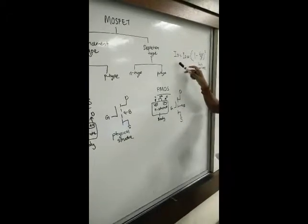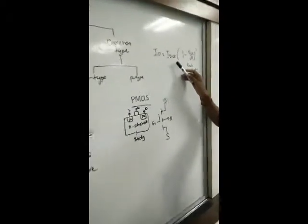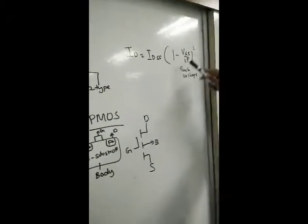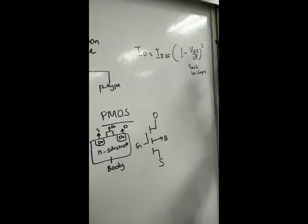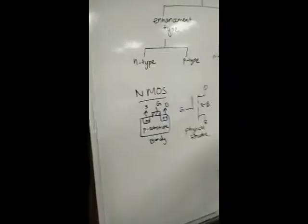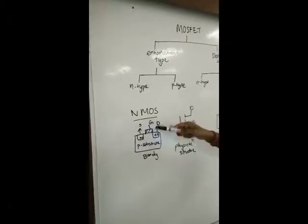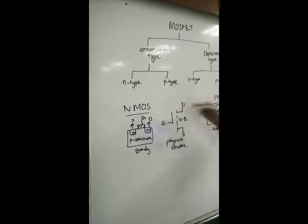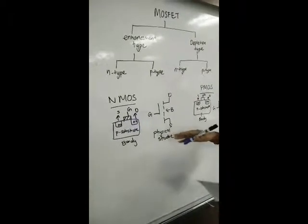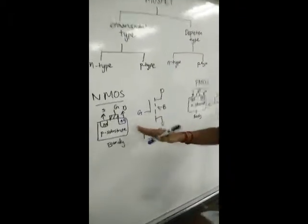The drain current equation is ID equals IDSS bracket (1 minus VGS over VP)² where VP is the pinch voltage. This is the physical structure of the N-MOS and P-MOS.